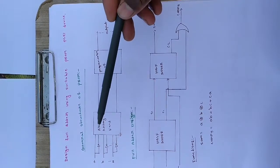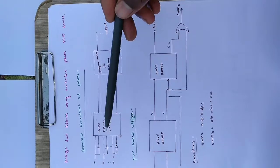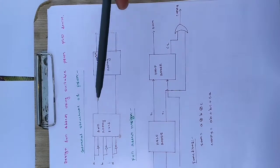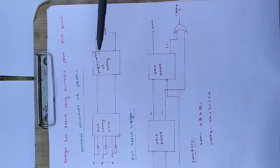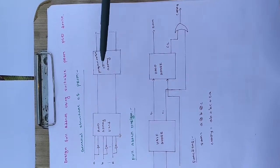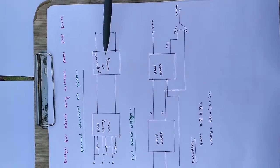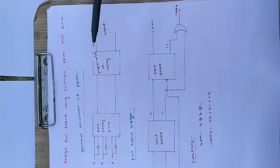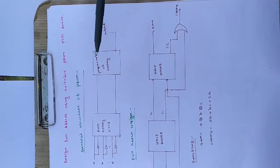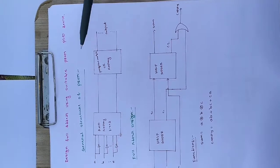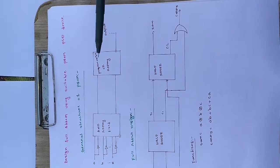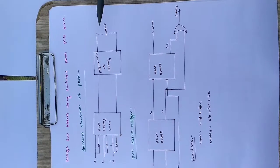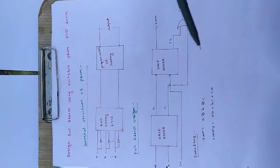The inputs are A, B, up to N. The complements of those inputs are taken and given to the AND array. In turn, the AND array output is given to the programmable OR array. The user's work is at the programmable OR array stage — depending on the application or boolean expression, we fuse or cross certain points, and according to that we get the output.